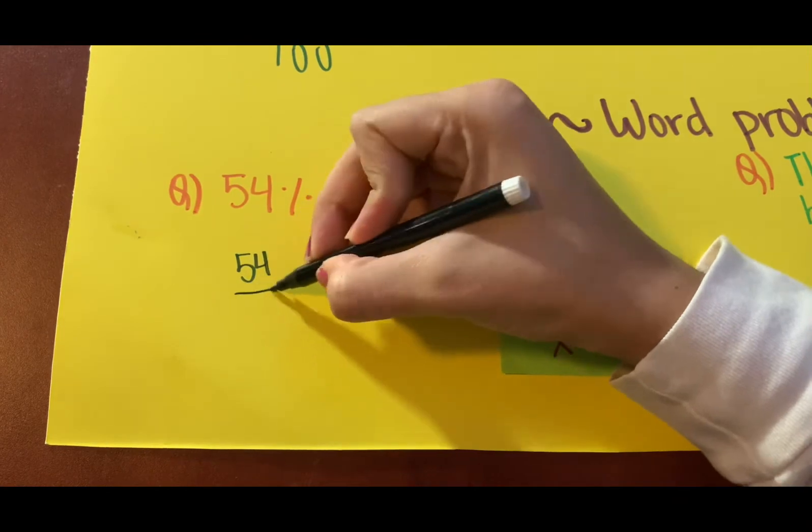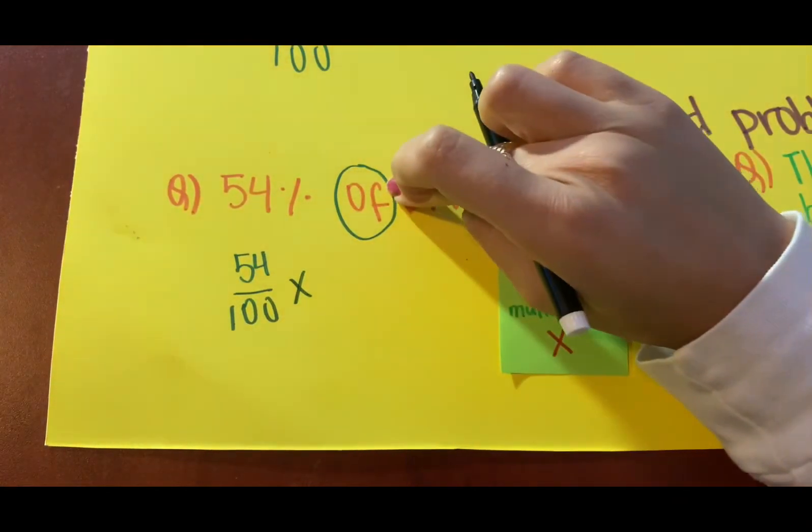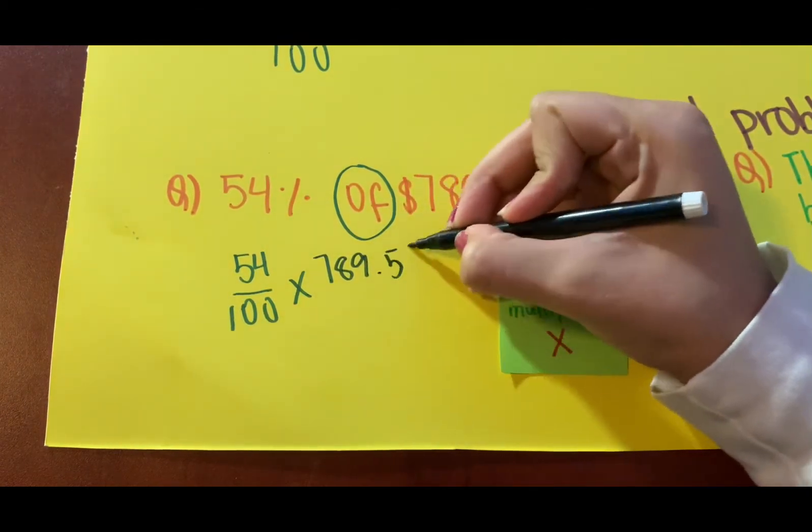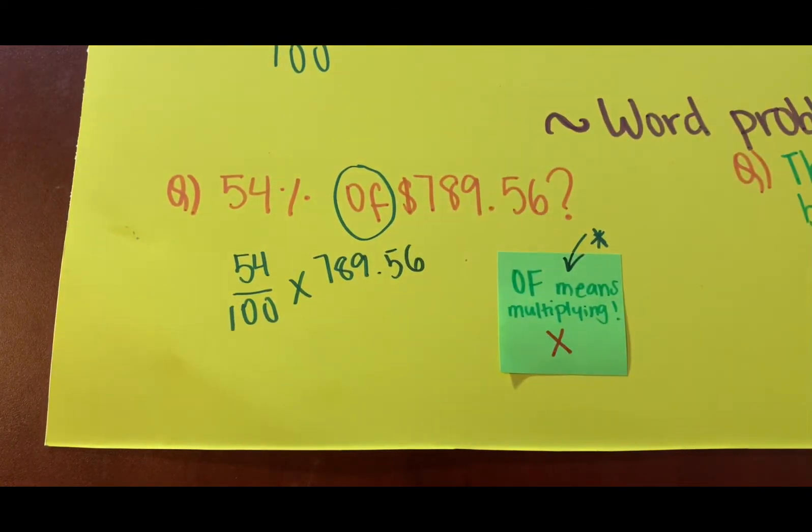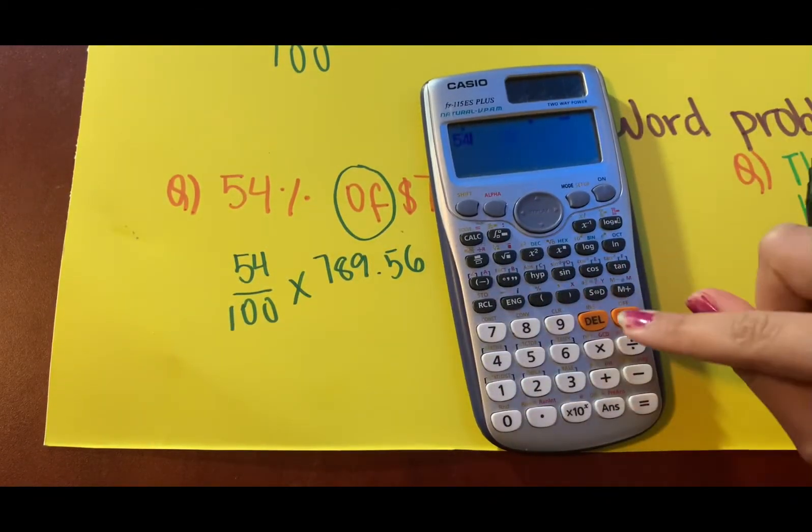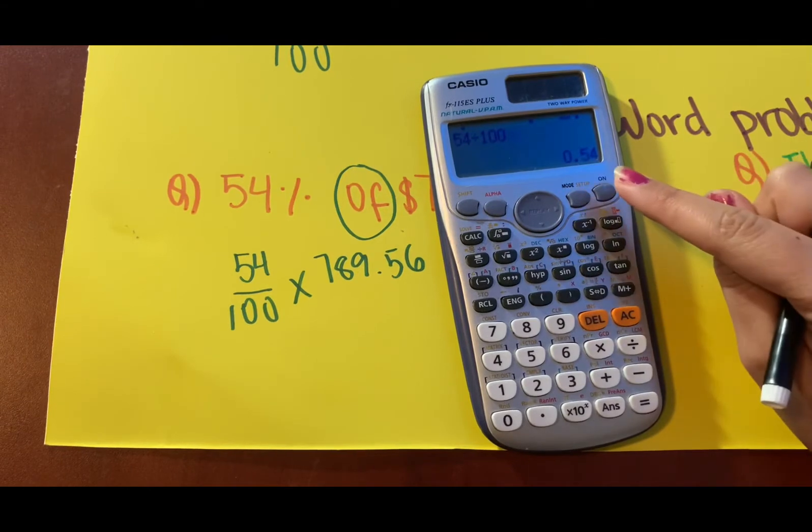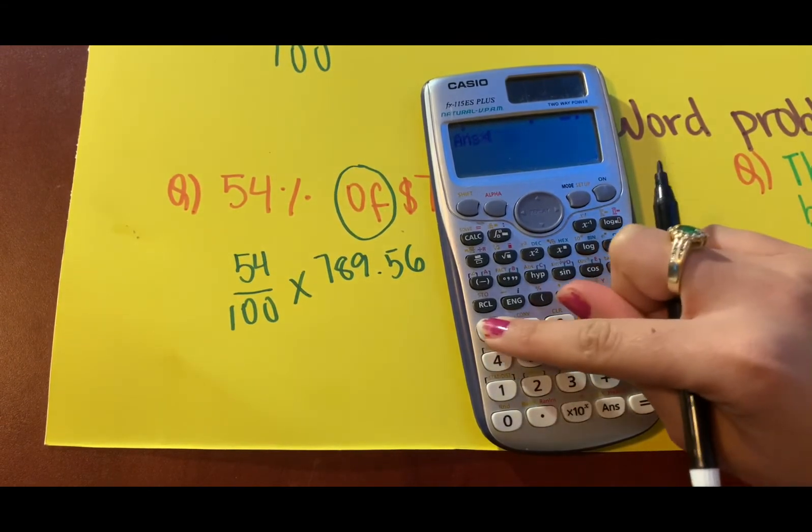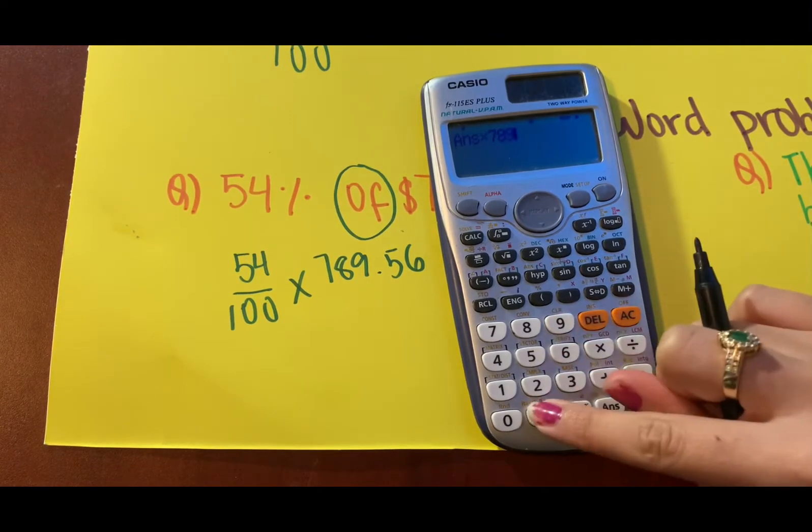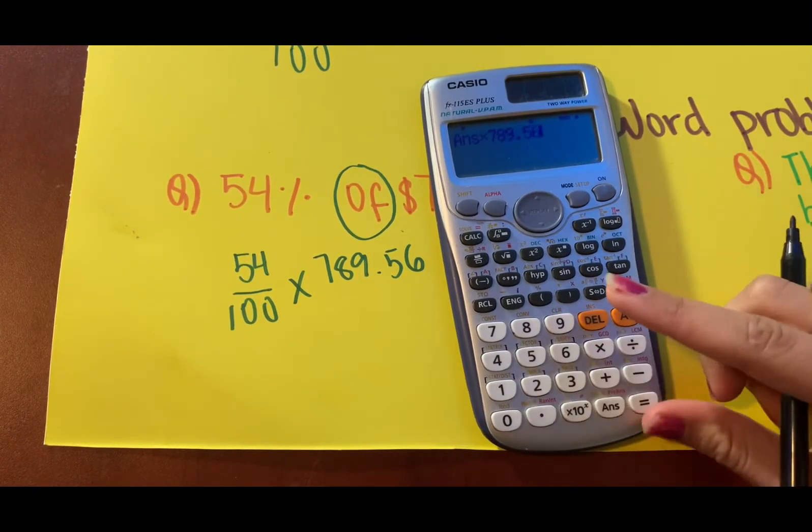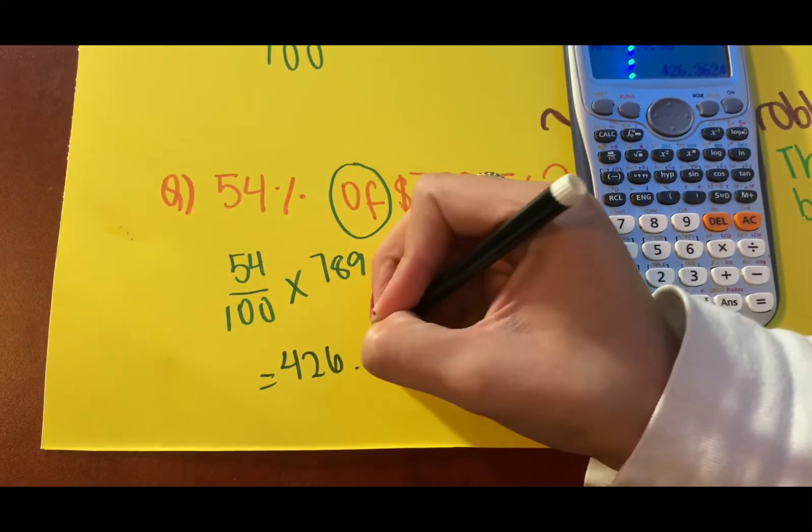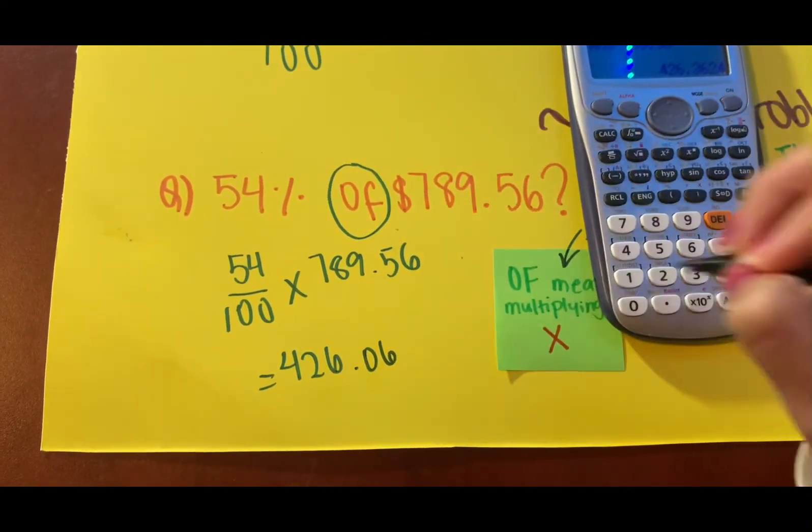Now this obviously will go into the calculator straightforward. 54 divided by 100 is 0.54. You multiply it by 789.56 and that will give you the answer as 426.06, rounded to two decimals.